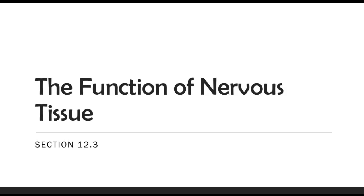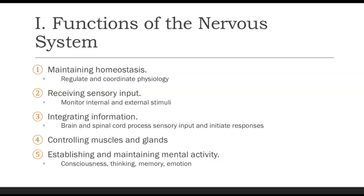Welcome to your third video in your chapter 12 video lecture series, where we're going to discuss section 12.3 on the function of nervous tissue. Before we do that, I wanted to discuss some of the functions of the nervous system. First, it's going to assist us in maintaining homeostasis by regulating and coordinating the physiology within our body.